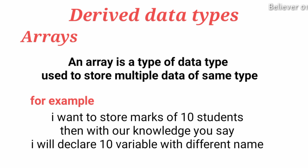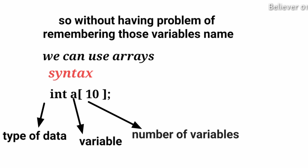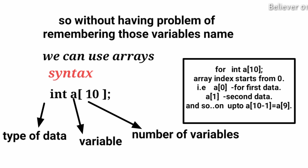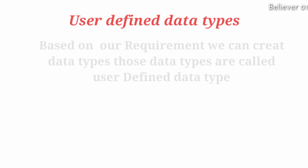Derived data types: array is a type of data type used to store multiple values of the same type. For example, if I want to store marks of 10 students, without arrays you would declare 10 variables with different names, which is difficult to remember. So we use arrays. The syntax is 'int a[10]' — here 'int' shows the type of data, 'a' is the variable, and '10' is the number of variables. Array index starts from 0, so for 10 students you can access index 0 up to 9.